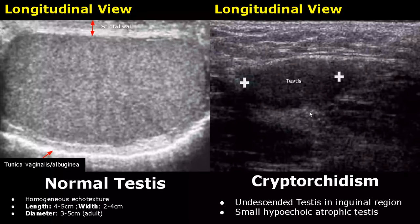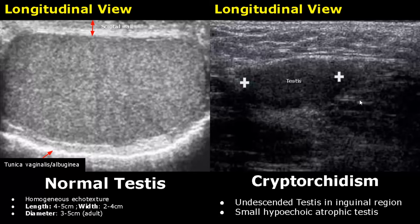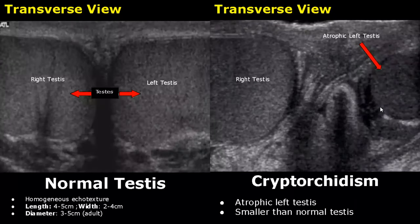Cryptorchidism refers to absence of testes and also includes undescended, ectopic, or atrophic testes. Here we see a small hypoechoic atrophic undescended testes in the inguinal region. In this transverse view we can see the atrophic left testes is smaller and more hypoechoic than the normal right testes.